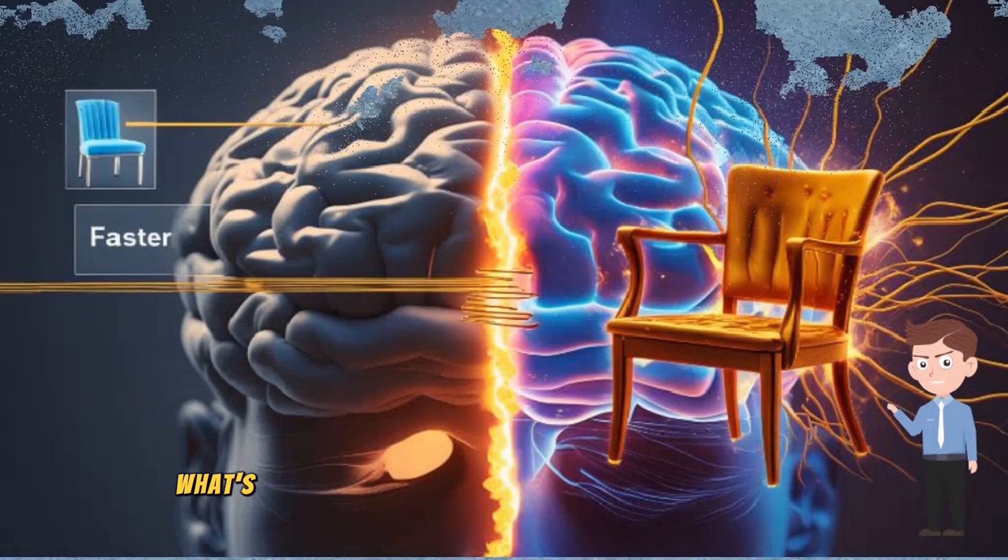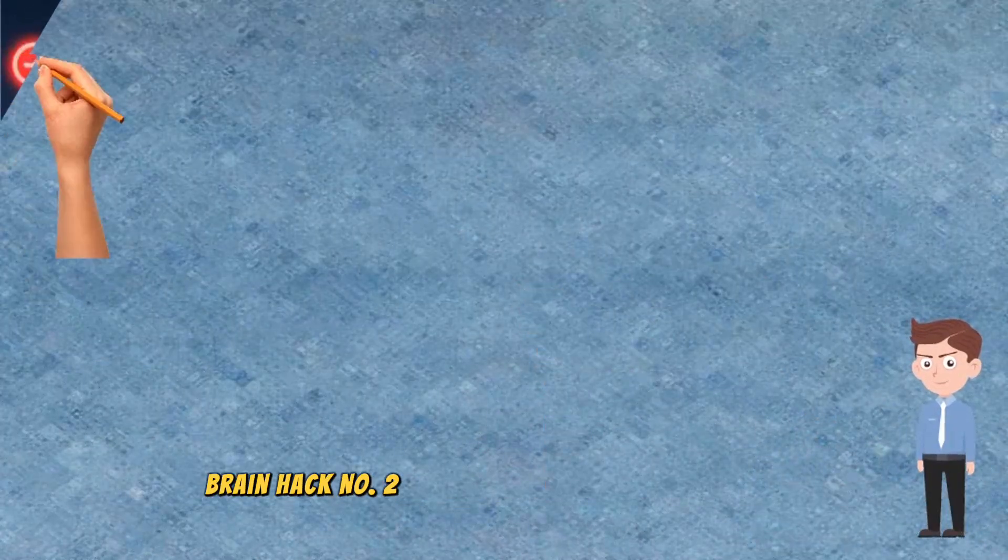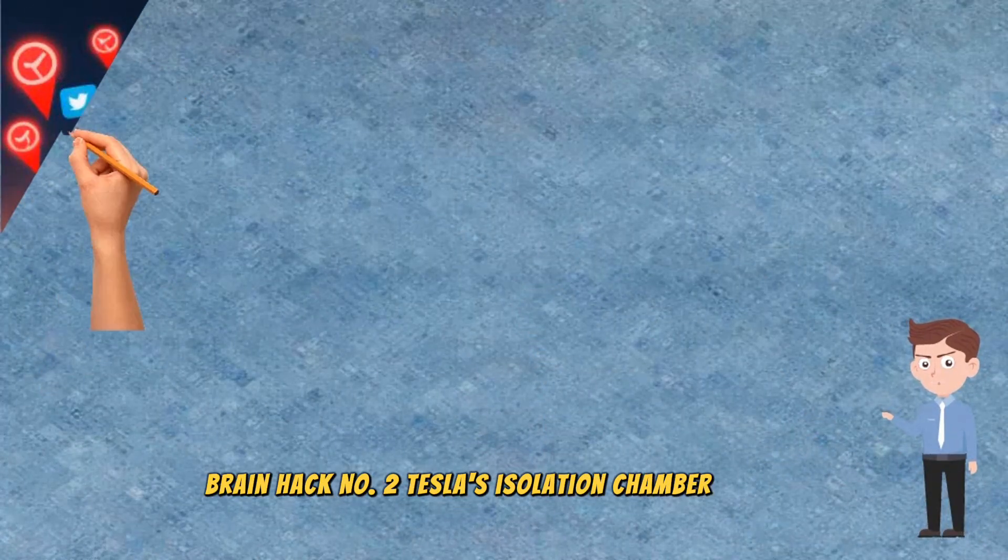Drop a comment. What's something you're going to try visualizing today? Brain hack number two. Tesla's isolation chamber method.